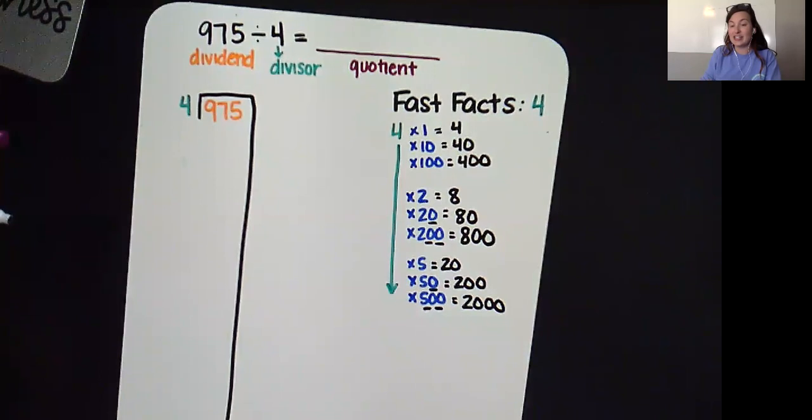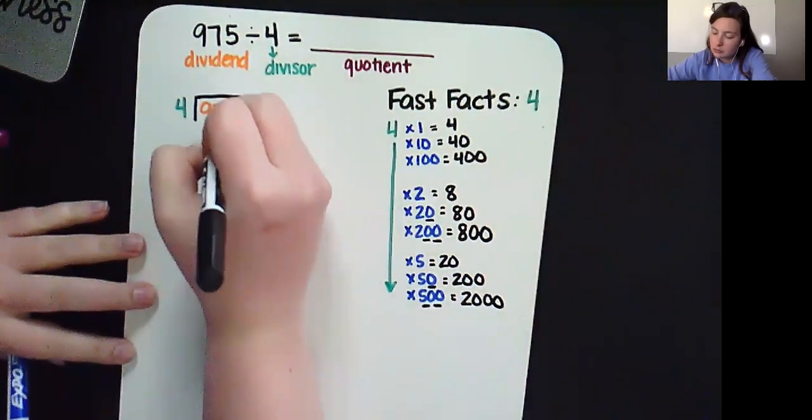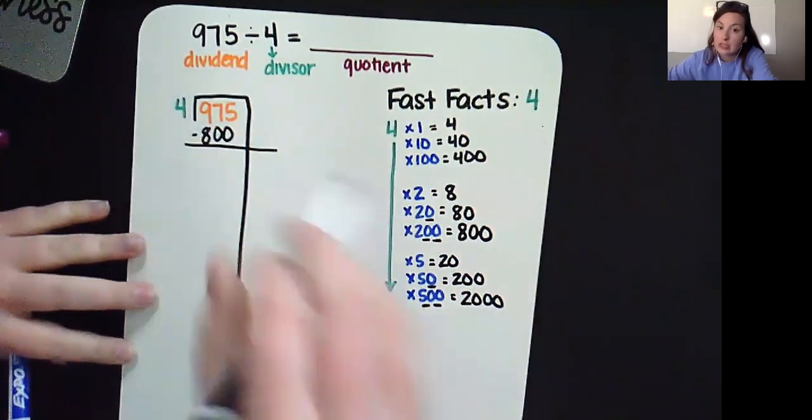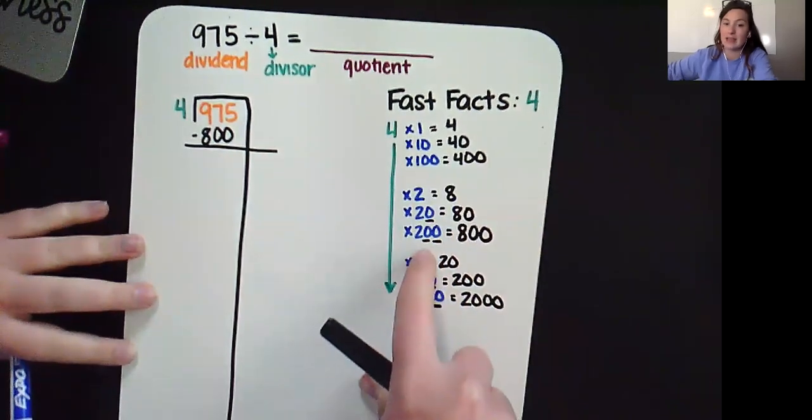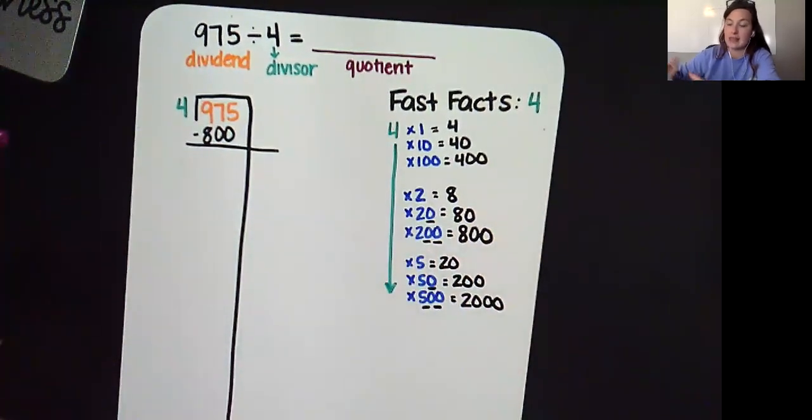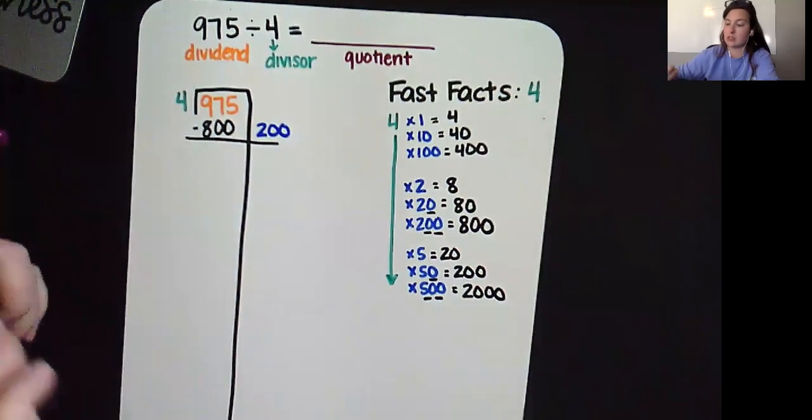We are looking at 975. What is the closest we can get to 975 without going over? Well, that would be 800. To make 800, I took my divisor and I used the fast fact of 200. So I'm going to write that outside so you can see it is there and ready.